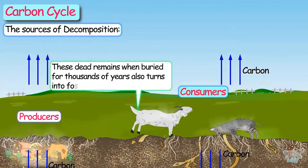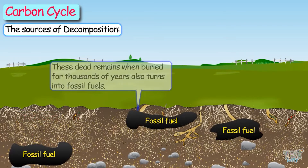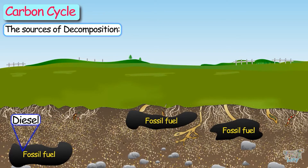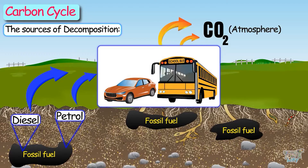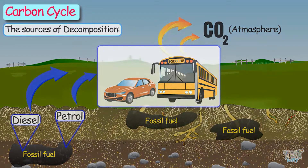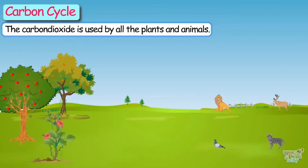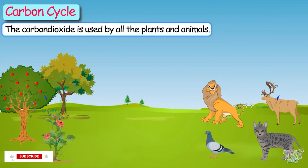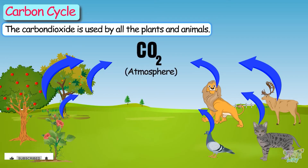These dead remains, when buried for thousands of years, also turn into fossil fuels — that is, diesel and petrol — that we use for our vehicles. Combustion of these fuels also releases carbon into the atmosphere. So carbon dioxide is used by all the plants and animals, and all the plants and animals release this carbon dioxide back into the atmosphere one way or the other.